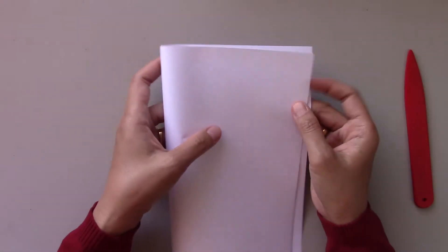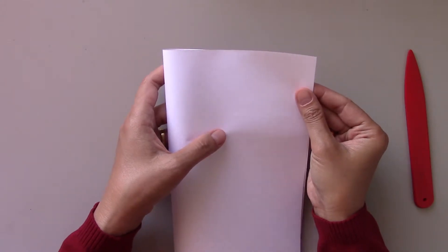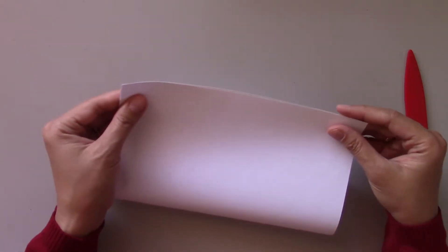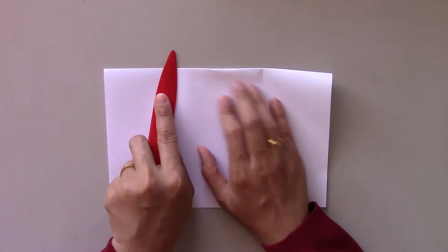Now fold the paper into half, making sure both edges are aligned. And score the fold, make it look nice.